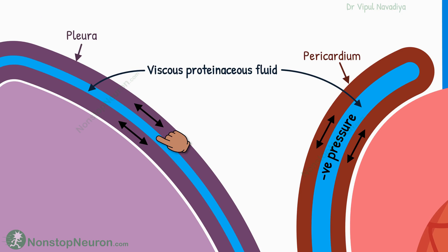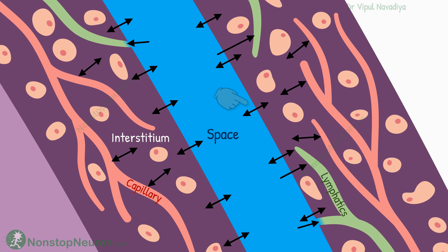The lubricant-like fluid in the space allows the sliding of two layers. Negative pressure inside holds the layers together. Fluid exchange with these spaces occurs via the interstitium of the surrounding tissues, and in some cavities, large lymphatics arise directly from the space.